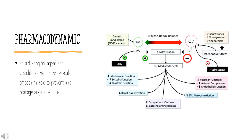At larger doses, nitric oxide causes resistance arteries and arterioles to dilate, reducing arterial pressure via coronary vasodilatation, leading to increased coronary blood flow. Reduced cardiac preload and afterload caused by nitric oxide results in a reduction in myocardial oxygen consumption and decreased myocardial oxygen demand, along with increased coronary blood flow, providing relief from ischemia.